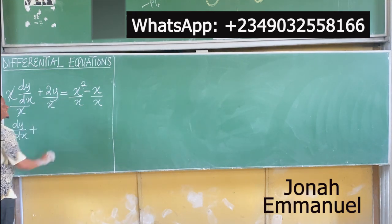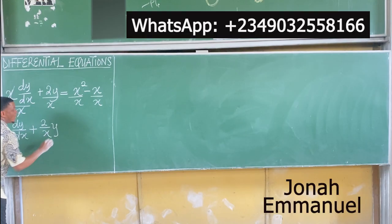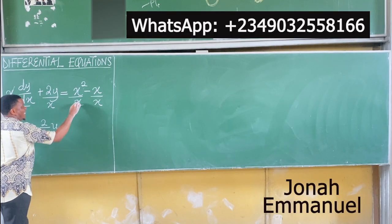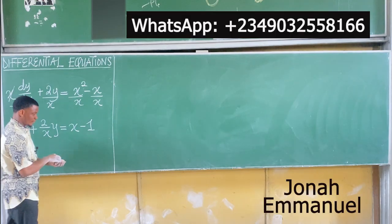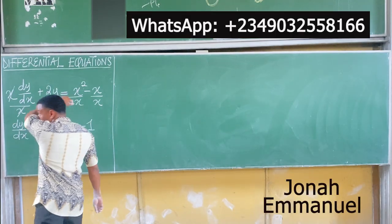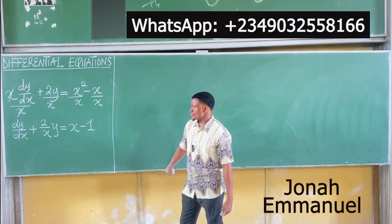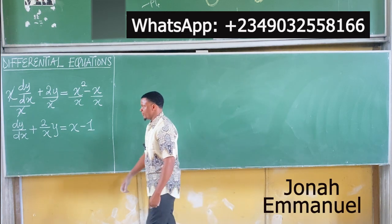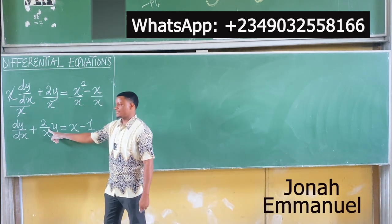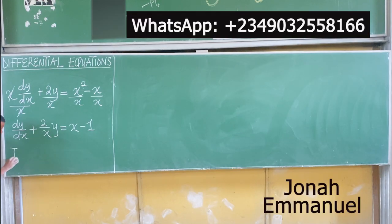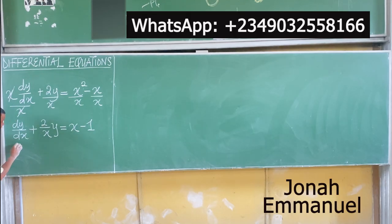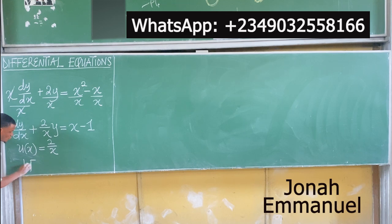After dividing each term by x, this cancels and you have dy/dx plus — don't forget you have u(x)y. So in doing that, to make y stand alone, it becomes 2 over x times y, equal to x squared divided by x, which gives you x, minus x divided by x, which gives you 1. So you have dy/dx plus u(x)y equal to v(x). Next we want to get the integrating factor. We know that u(x) is equal to the coefficient of y, which is 2 over x.